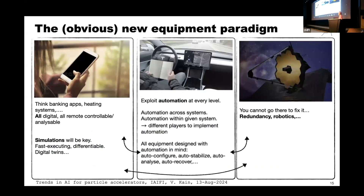Another slide from the FCC operational model discussions: everything would have to be digital, remote-controlled, or analogical. Simulations would be key. Automation at every level — automation across systems, automation within given systems, and all equipment designed with automation in mind: auto-configure, auto-stabilize, auto-analyze, auto-recover. Because of the sheer size, you think more like a space telescope — things like robotics and redundancy for situations where you cannot go there to fix it.